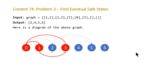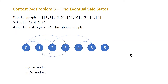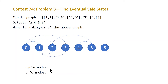I'll leave links in the description for the wiki pages on directed graphs and directed acyclic graphs if you want to read more. To solve this, we're going to have two unordered sets — one called cycle nodes and one called safe nodes — and we're going to perform a depth-first search on each node. Anytime we reach a terminal node we add it to safe nodes, and anytime we visit a node already in our recursion call stack we add it to cycle nodes.